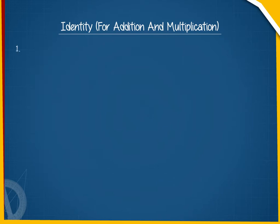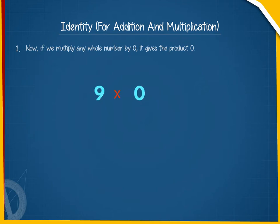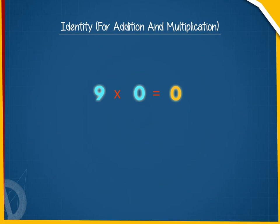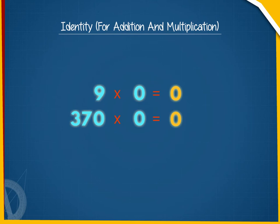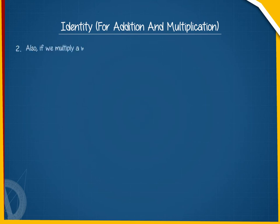If we multiply any whole number by zero, it gives the product zero. For example, multiplying 9 by 0 gives the product zero — nine into zero is equal to zero. Similarly, multiplying bigger numbers like 370 by 0 will give the product zero — 370 into 0 is equal to zero.